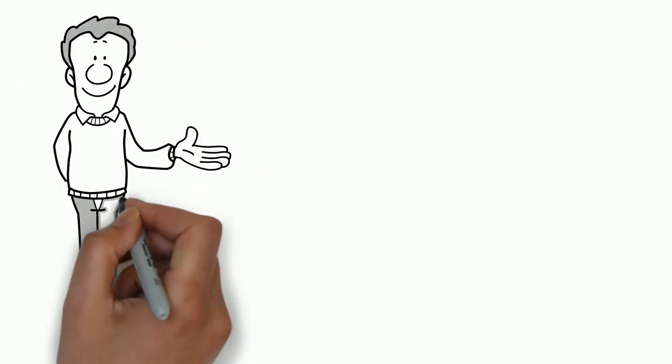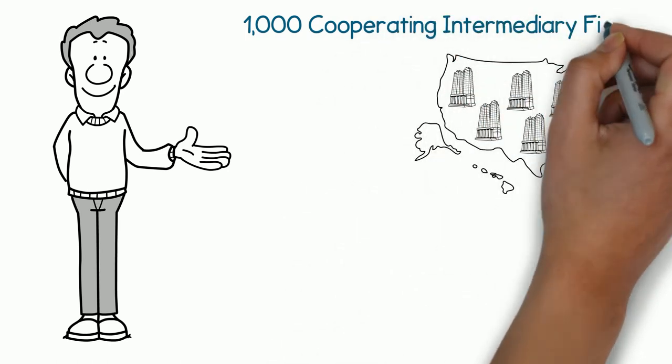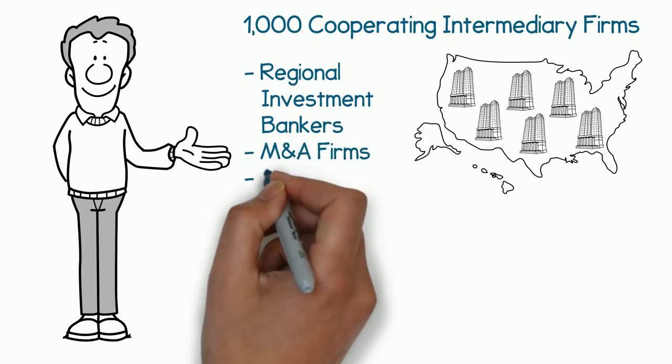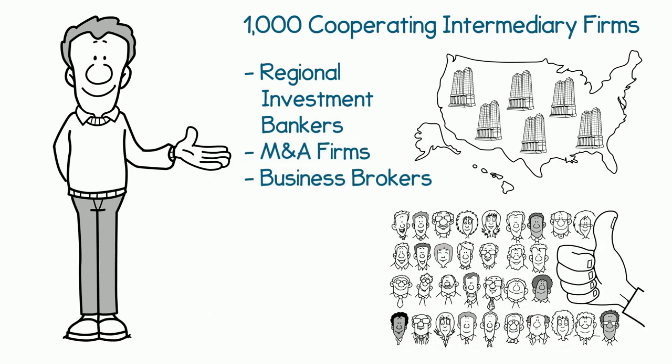Additional deals come to us from our nationwide network of over 1,000 cooperating intermediary firms. These firms are comprised of regional investment bankers, M&A firms, and business brokers who trust us. That relationship gives us access to their mid-market sellers.